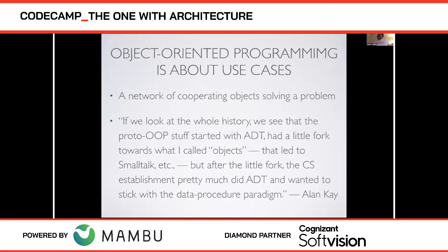This might strike you as a little extreme, but Alan Kay's vision is that object-oriented programming is about use cases — a network of cooperating objects solving a problem. Alan Kay says: 'The proto-OOP stuff started with abstract data types, had a little fork toward what I call objects leading to Smalltalk. But after that fork, computer science pretty much did abstract data types and stuck with the data-procedure paradigm.' Object orientation got lost very early on, probably by the early 1980s.